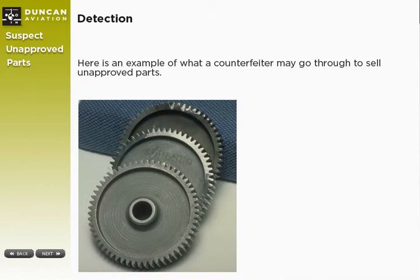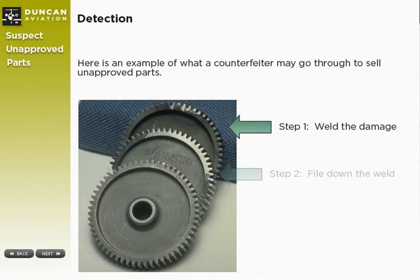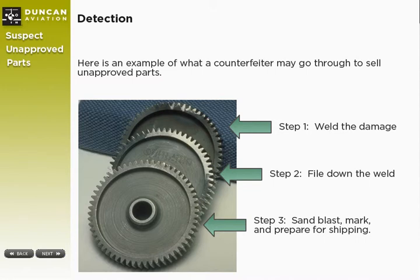Finding and detecting suspect unapproved parts can be very difficult. Some counterfeiters are very good at what they do and make it extremely difficult to tell the difference between an approved part and an unapproved part. Here is an example where a counterfeiter has transformed some gears to look as if they were an approved part. They start by welding the damage, it's filed down so it's smooth, and finally they sandblast, mark, and prepare the item for shipping.